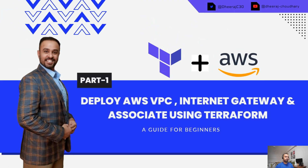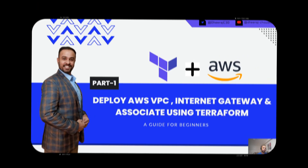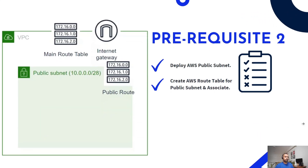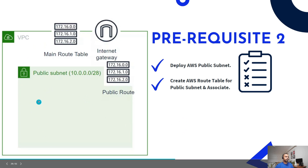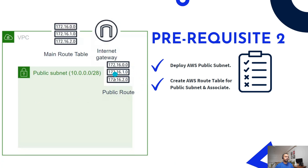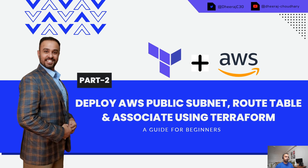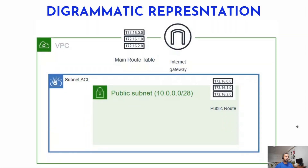You can refer to the Part 1 YouTube video that has already been published. The second prerequisite is — since we already have VPC and Internet Gateway created — we are going to create a public subnet and a public route table, and once this route table is created we are going to associate them. Both these things are mandatory requirements that you have to do before moving ahead.